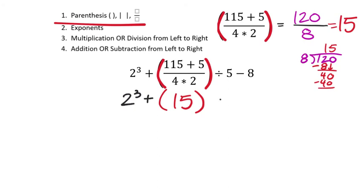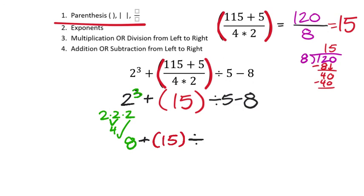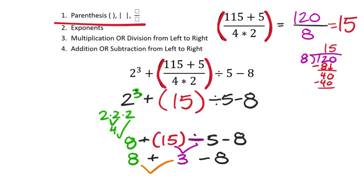Now we have 2³ + 15 ÷ 5 − 8. Next, the exponent: 2 to the power of 3 is 2 × 2 × 2. 2 times 2 is 4, times the last 2 is 8. Now it's 8 + 15 ÷ 5 − 8. Moving to multiplication or division from left to right: 15 ÷ 5 is 3. Now I have 8 + 3 − 8. Addition or subtraction from left to right: 8 + 3 is 11, then 11 − 8 is 3. That's our final answer: 3.